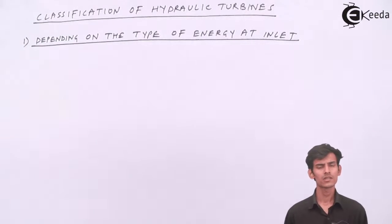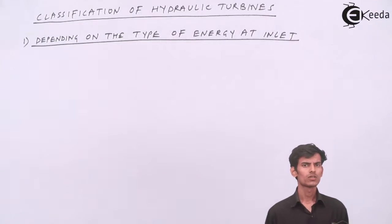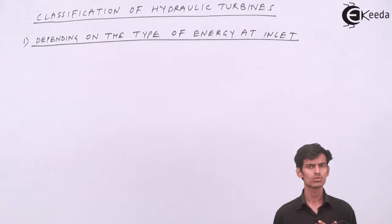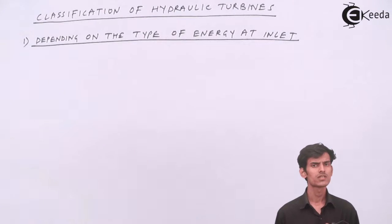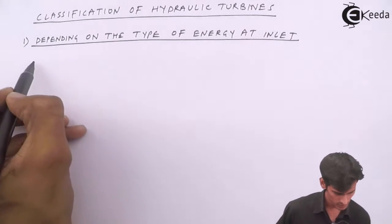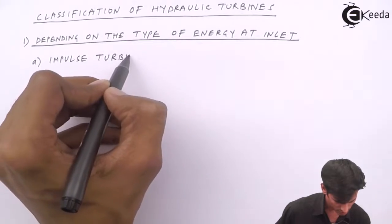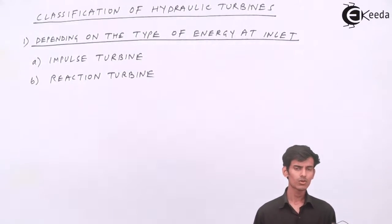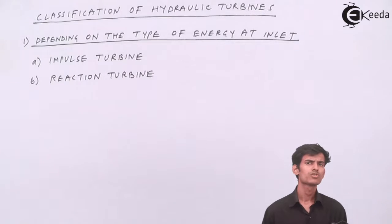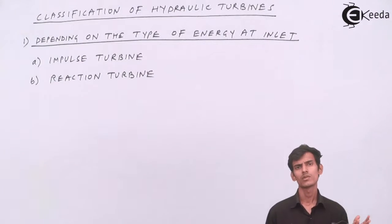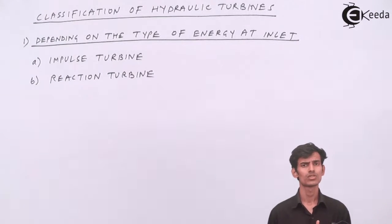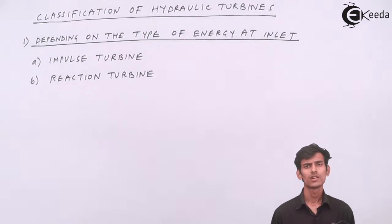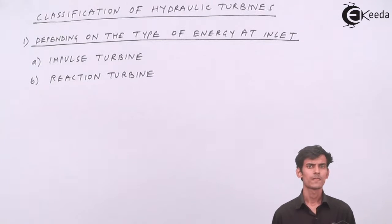The first way of classifying is depending on the type of energy available at the inlet. The two types are the impulse turbine and the reaction turbine. An impulse turbine is a turbine in which all the potential energy of the water gets converted into kinetic energy in the nozzle. All the energy stored in the dam is converted to kinetic energy — there is no pressure energy left. So the impulse turbine uses only the kinetic energy of the fluid to generate power.